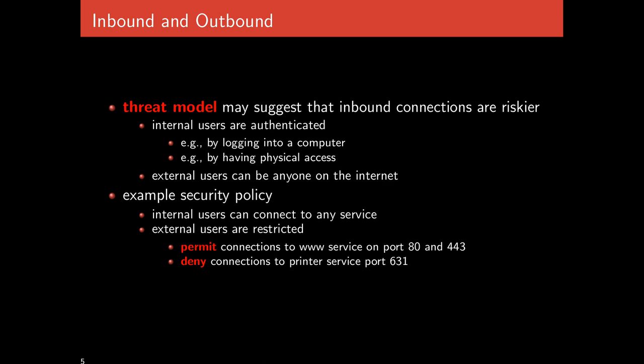On the other hand, you can have other threat models. For instance, if you want to censor people and prevent users under your control from accessing certain information, you might be more concerned about internal users. An example security policy could be: internal users can connect to any service freely, while external users are restricted. We permit connections to HTTP on port 80 and HTTPS on port 443, but deny connections to the printer service on port 631 — allowing anyone on the internet to access a web page we're running, but not to send print jobs to physical printers within the organization.